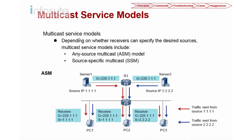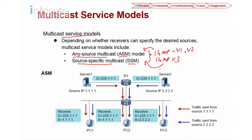In multicast, we have two service models: ASM and SSM. ASM stands for Any Source Multicast, and SSM stands for Source Specific Multicast. These two models have a direct relationship with the IGMP version the receiver uses. IGMP version 1 and version 2 are generally used for ASM, while IGMP version 3 is generally used for SSM — Source Specific Multicast.